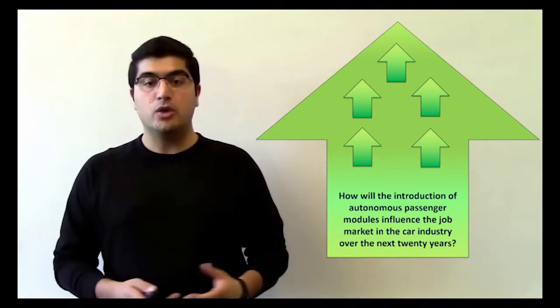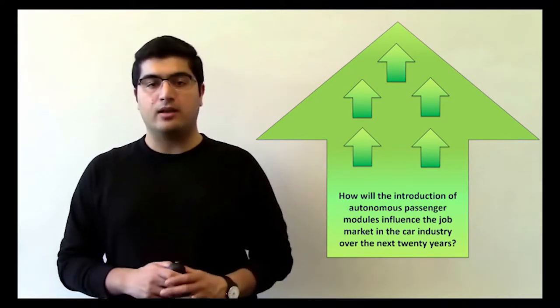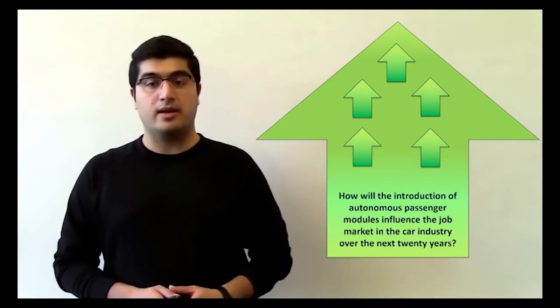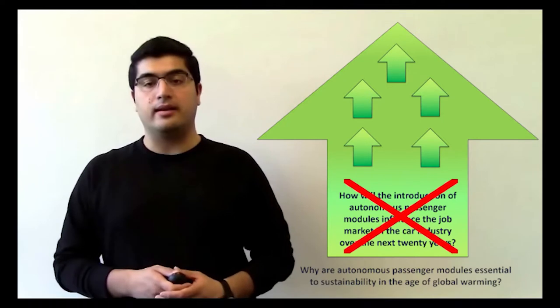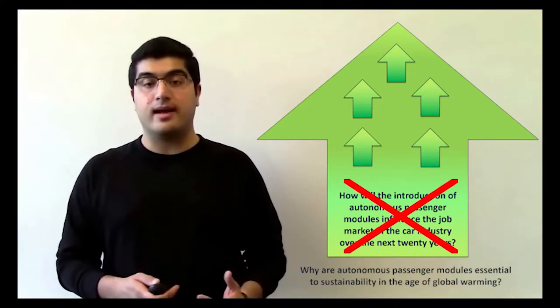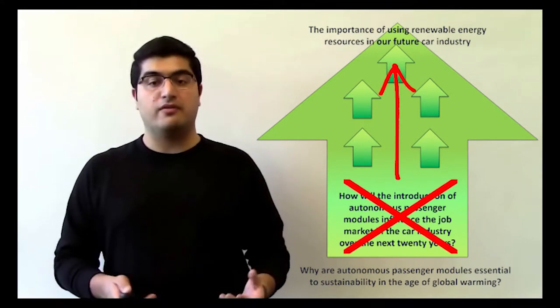Similarly, you can completely change the course of your paper by approaching your topic from a different angle and asking completely different questions. For our topic, you can ask why this new technology is essential to sustainability in the age of global warming, and take your paper to a direction where you will discuss the importance of using renewable energy resources in our future car industry.